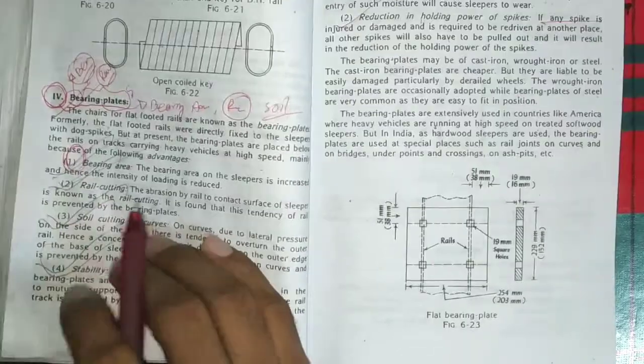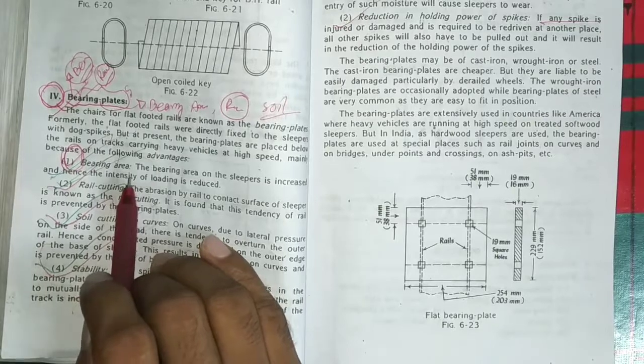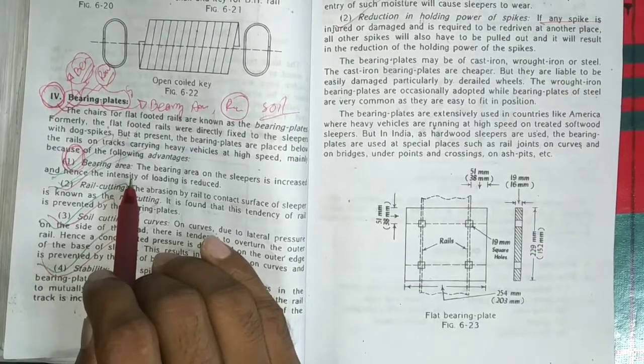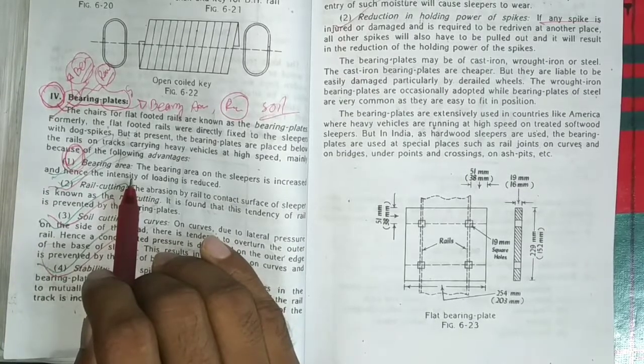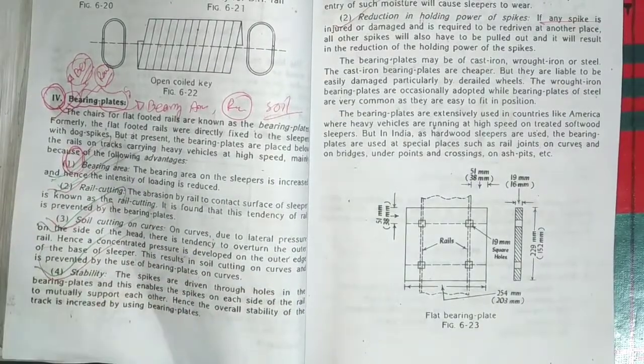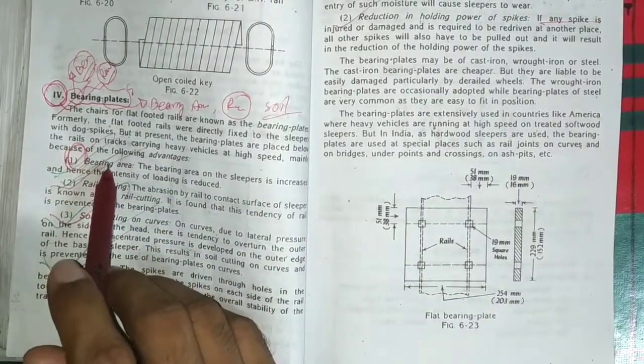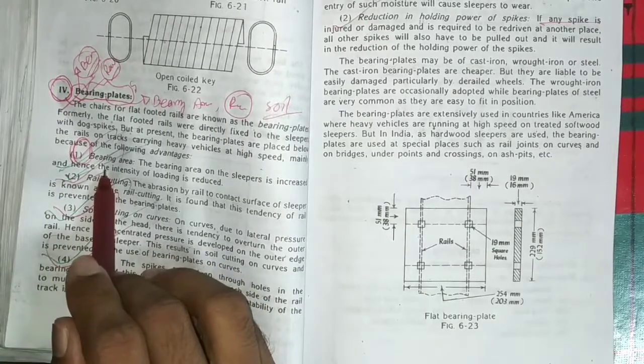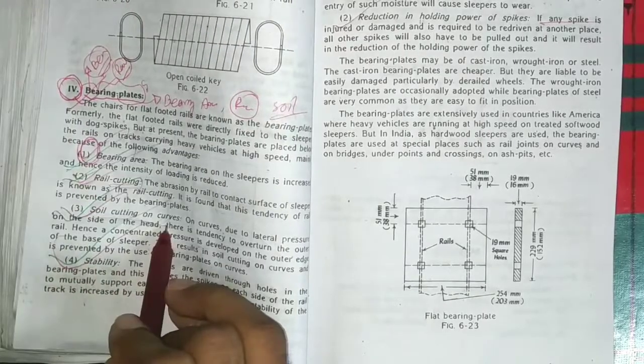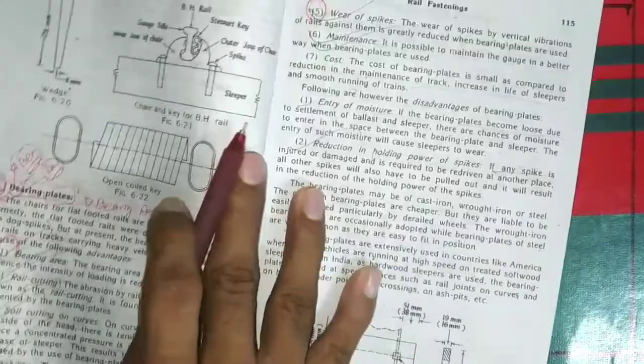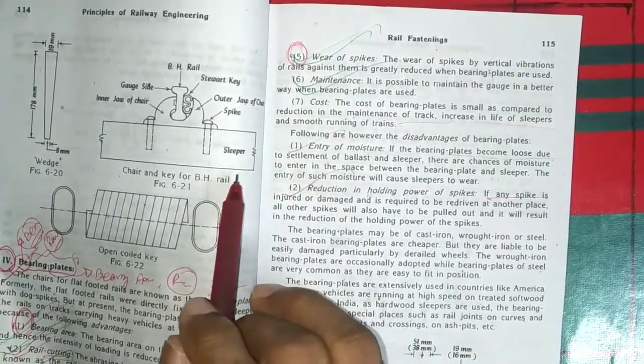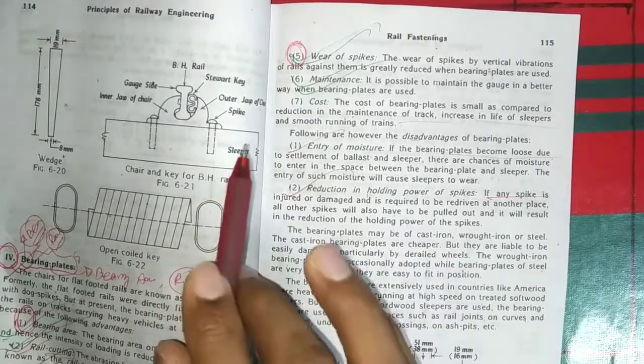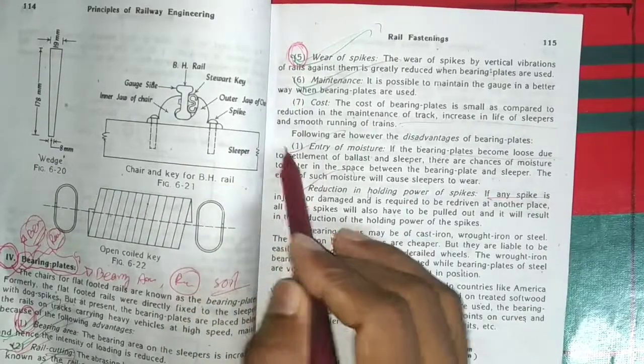This is a very important case of the bearing plate. This is a very important case of the tilting of the rail. The bearing plate is used to reduce the tilting of the rail. It is a wide-to-wide gauge. It is a problem with the tilting of rail. We can run the bearing plate. The technical thing is that we are going to see a bearing area. If we are at the same point in the bearing area, we can see a lot of rail cutting.